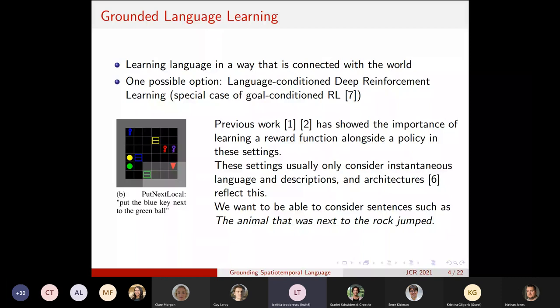In recent years, one possible option to study grounded language learning has been language-conditioned deep reinforcement learning, where an agent is provided not only with the state of the world but also with, for instance, a language instruction and has to perform what the instruction specifies.